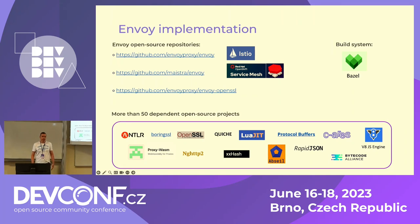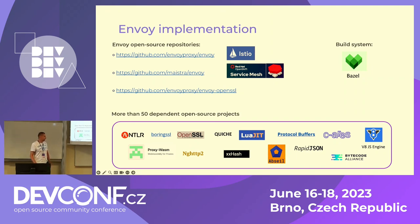Envoy is written in C++ and Bazel is used as a build system. It has approximately 60 external dependencies, each a separate open source repository. Some are pretty big and well-known, such as the Google V8 JavaScript engine. From a security perspective, the Envoy build is done in an offline environment, and all code including Envoy itself and all dependencies are built from source without using any pre-built libraries or binaries. The build takes more than one hour depending on the hardware available on the build machine.